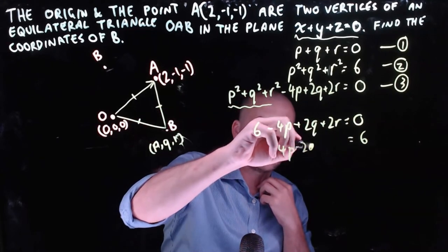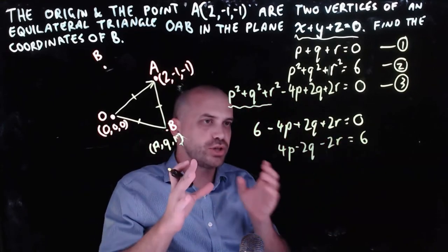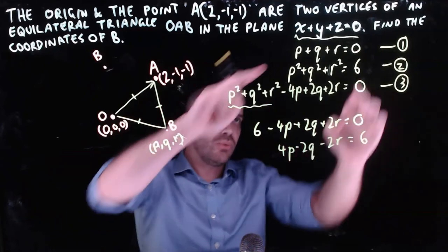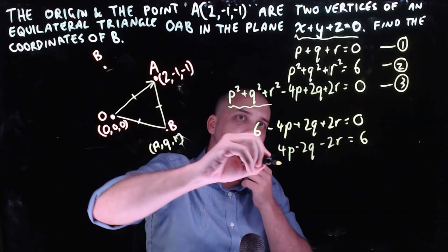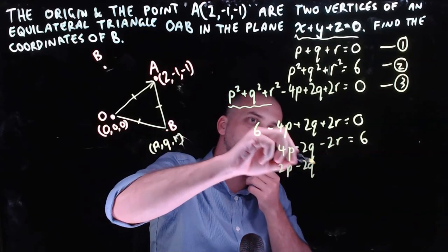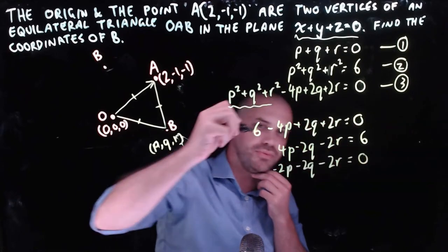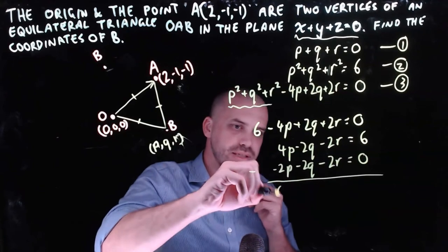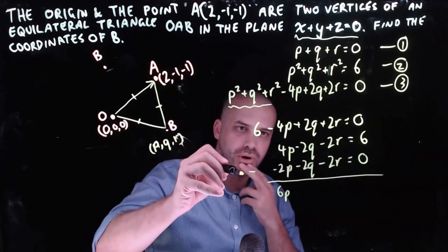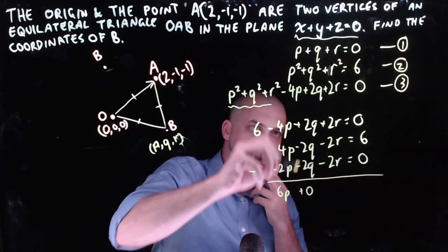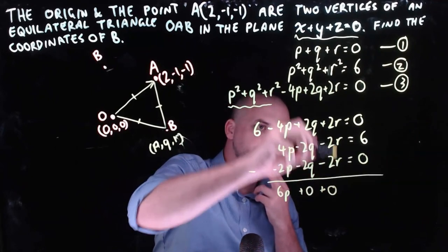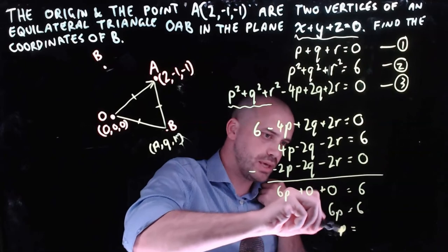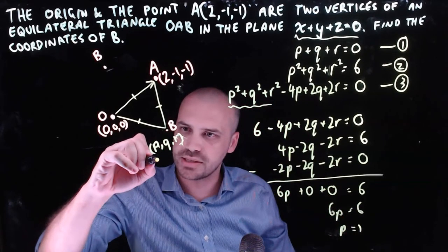Rearranging: 4p − 2q − 2r = 6. Now I take equation one — p + q + r = 0 — and multiply it by −2 to get −2p − 2q − 2r = 0. Using elimination: (4p − 2q − 2r) + (−2p − 2q − 2r) = 6 − 0, which simplifies to 6p = 6, so p = 1.